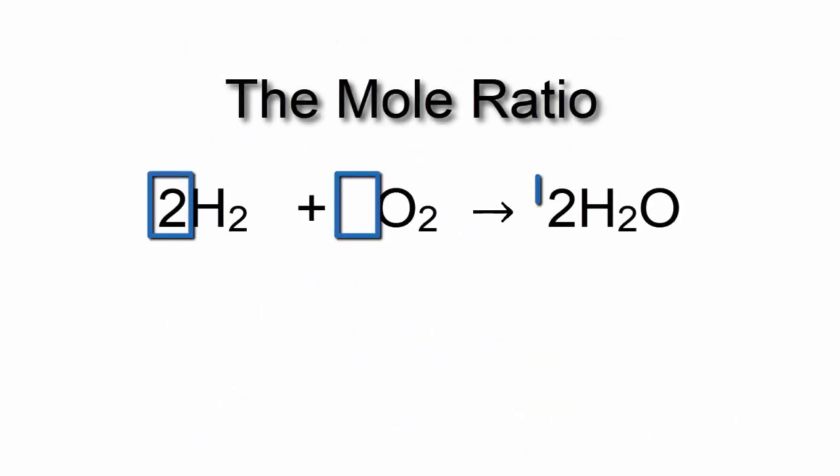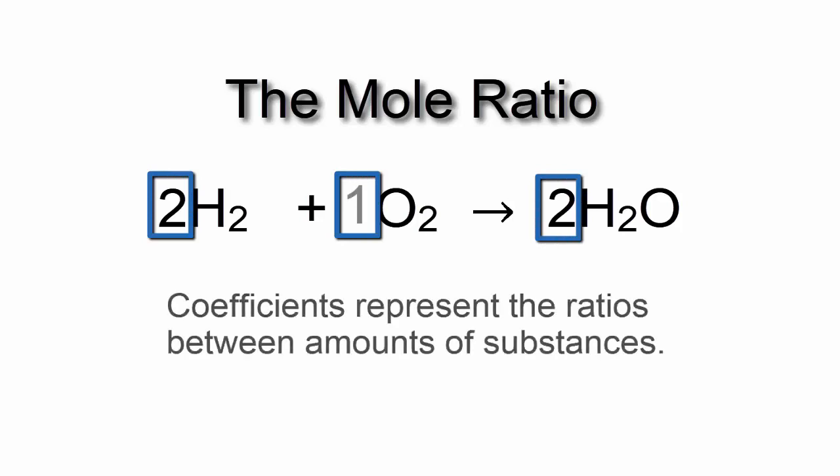To recap, a balanced equation shows us the ratio of moles for each compound in the chemical reaction. If we're given a certain number of moles for a substance, we can use the ratio from the balanced equation to figure out the moles for the rest of the compounds in the equation. This is Dr. B with the mole ratio, and thanks for watching.